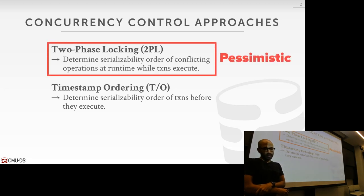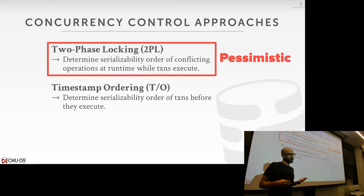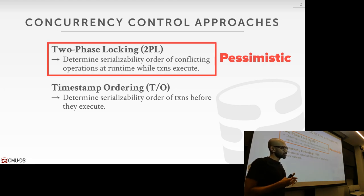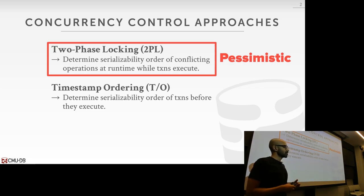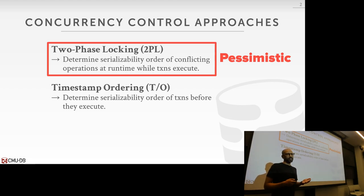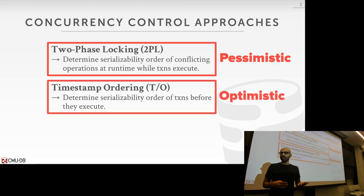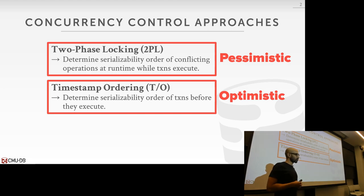At a high level, two-phase locking assumes there's going to be a lot of contention inside of the transactions executing in the database. If there's a lot of contention, it's advantageous to be defensive and take a lot of locks — acquiring them anytime you want to read or write a database object. So in that sense, it's quite pessimistic. Timestamp ordering-based techniques, on the other hand, are more optimistic: you allow the database to operate and read and write data without acquiring locks, and correctly reconcile a serializable schedule at the end.